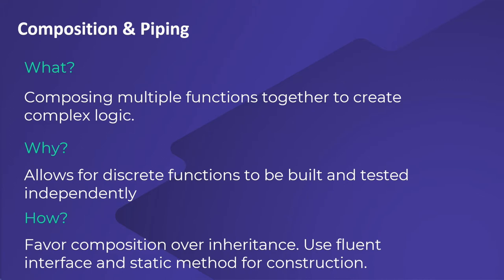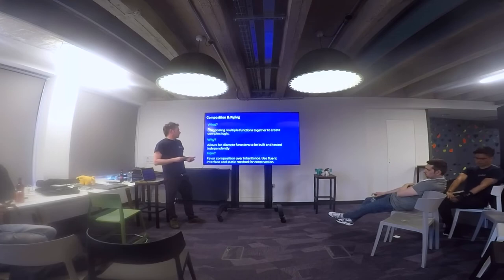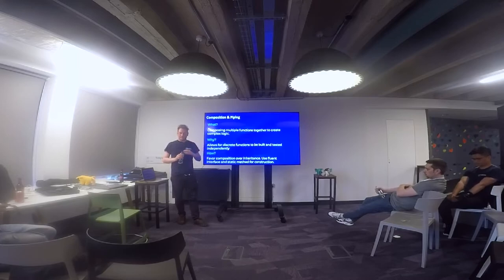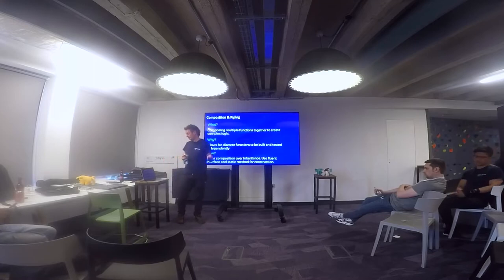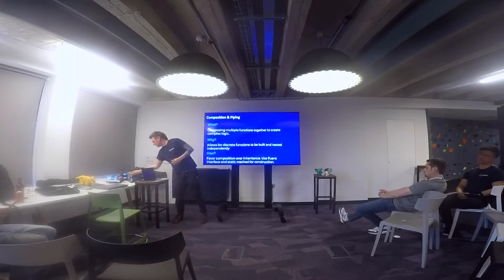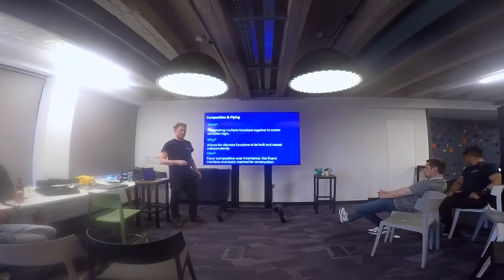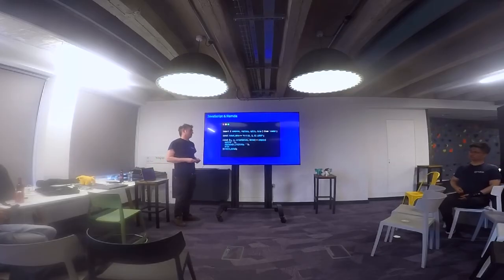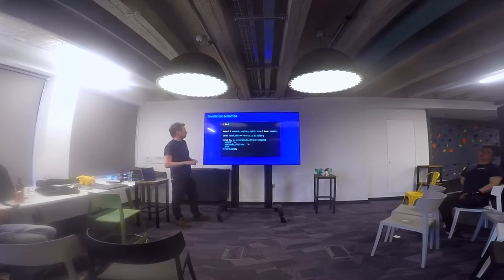Composition and piping is essentially a way of composing functions together to build more complex logic out of smaller discrete functions. In PHP and object orientation, this means favouring composition over inheritance, and also use of a fluent interface and static methods for construction — much like in the Laravel classes we just looked at.